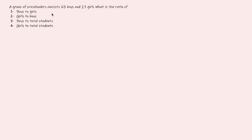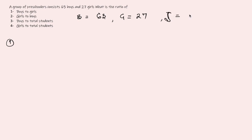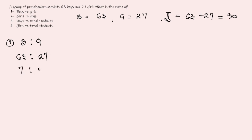The next question: a group of preschoolers consists of 63 boys and 27 girls. Find the ratio of boys to girls, girls to boys, boys to total students, and girls to total students. Boys equals 63, girls equals 27, and total students equals 63 plus 27, which is 90. Boys to girls is 63 to 27; dividing both by 9 gives 7 to 3.